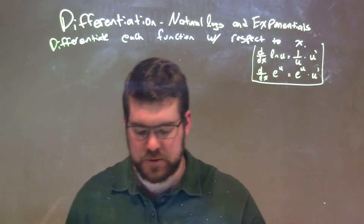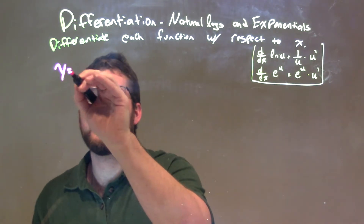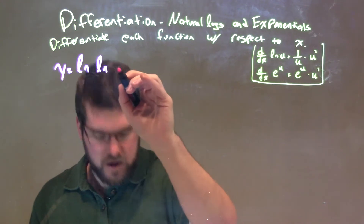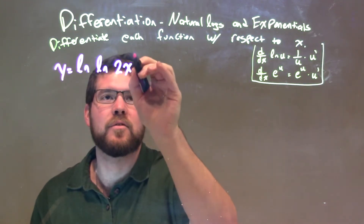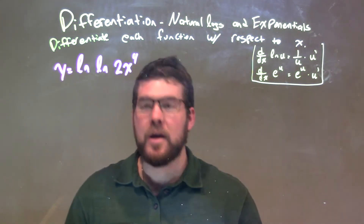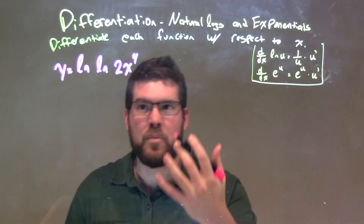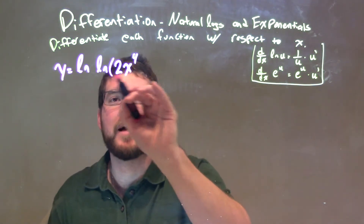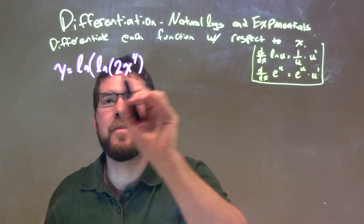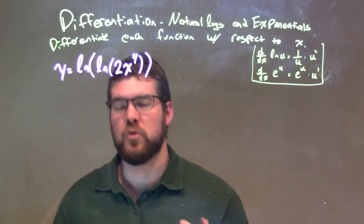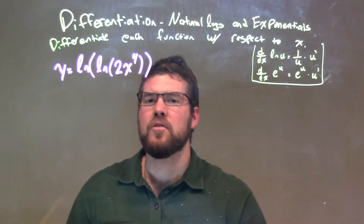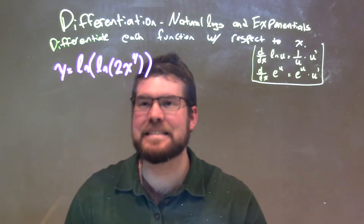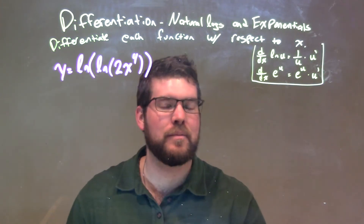If I was given this function — y equals the natural log of the natural log of 2x to the fourth power — the parentheses help show the order. We have the natural log of 2x to the fourth, and then the natural log of that whole expression. We're going to apply derivatives with natural logs as well as the chain rule a few times.